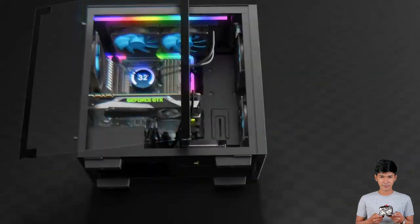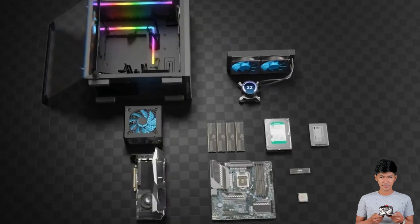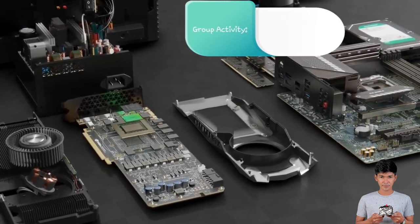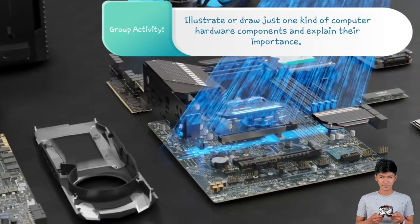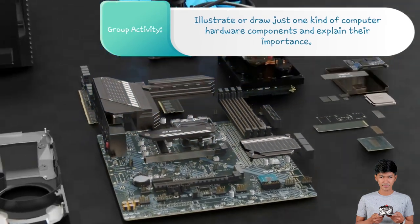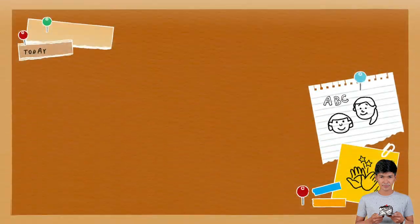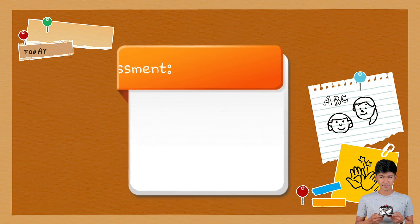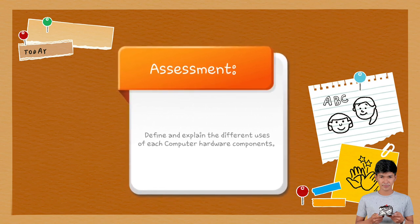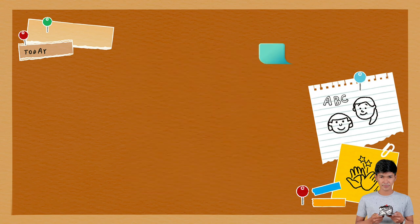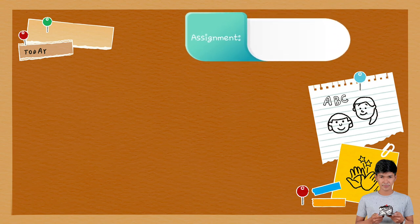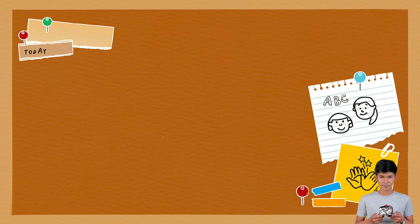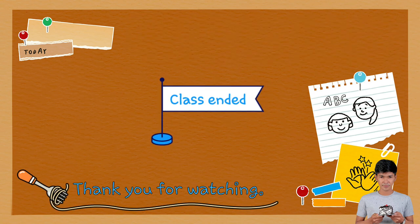And this is the end of our discussion. So class, any questions about our topic? Now, I want you to group yourselves into five groups. In your group, illustrate or draw just one computer hardware component and explain its importance. I will give you ten minutes. After that, present your output to the class. For your assessment, in one half sheet of paper, define and explain the different uses of each computer hardware component. For your assignment, in one half sheet of paper, search for basic troubleshooting techniques for computer hardware and software issues. So this is the end of our class — goodbye everyone, and thank you for watching!